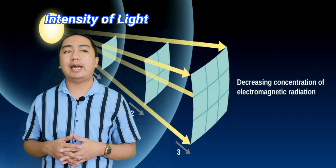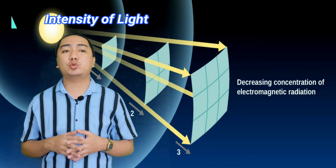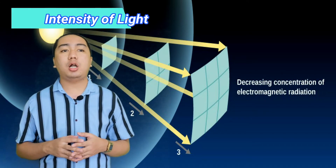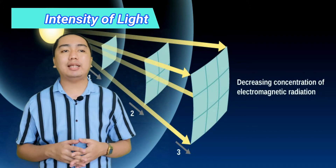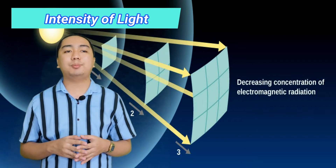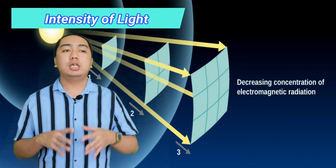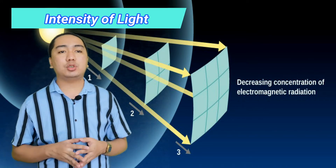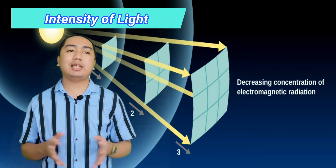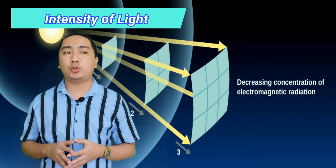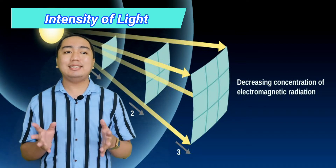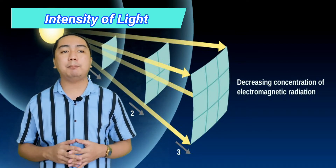Now let's proceed to the intensity of light. You have probably noticed that light appears to be brighter when you are close to it and dimmer when you are farther away. This is because the brightness of light depends on how far you are from the source. The particle nature of light explains how the brightness or intensity of light changes with distance. Particles of light travel in a straight line from a light source, and at the source, all particles of light are closer together.